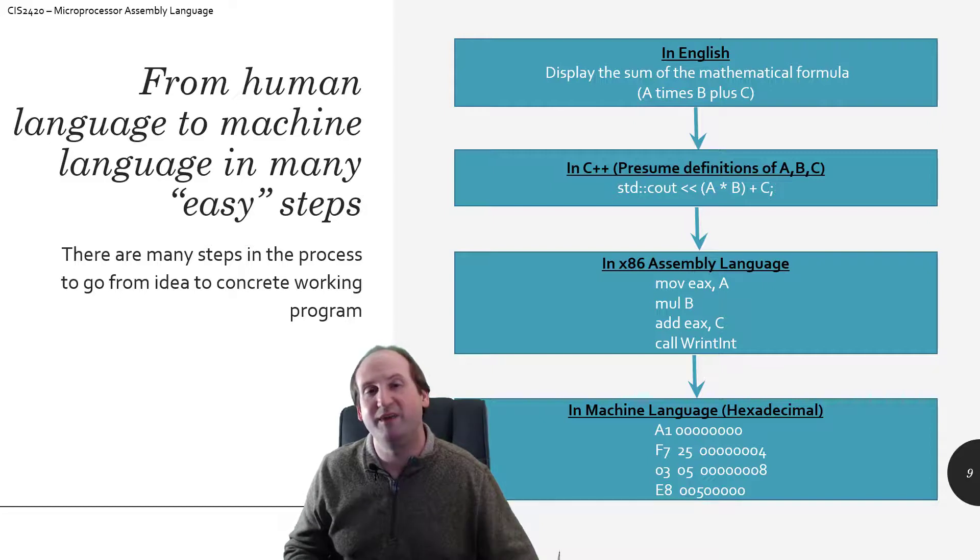So going from English to the C++ definition, there it is: std::cout, A times B plus C, and those parentheses don't need to be there because of PEMDAS rules, but it makes sense to put that there because we want to make it easier readability, more readability on the back end when you go to come see this next time or a month later.